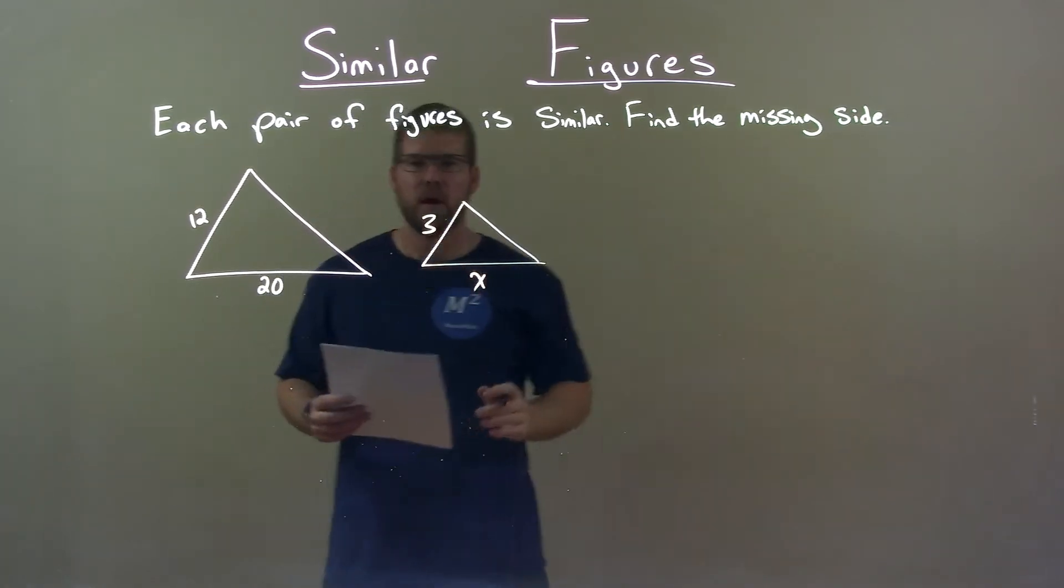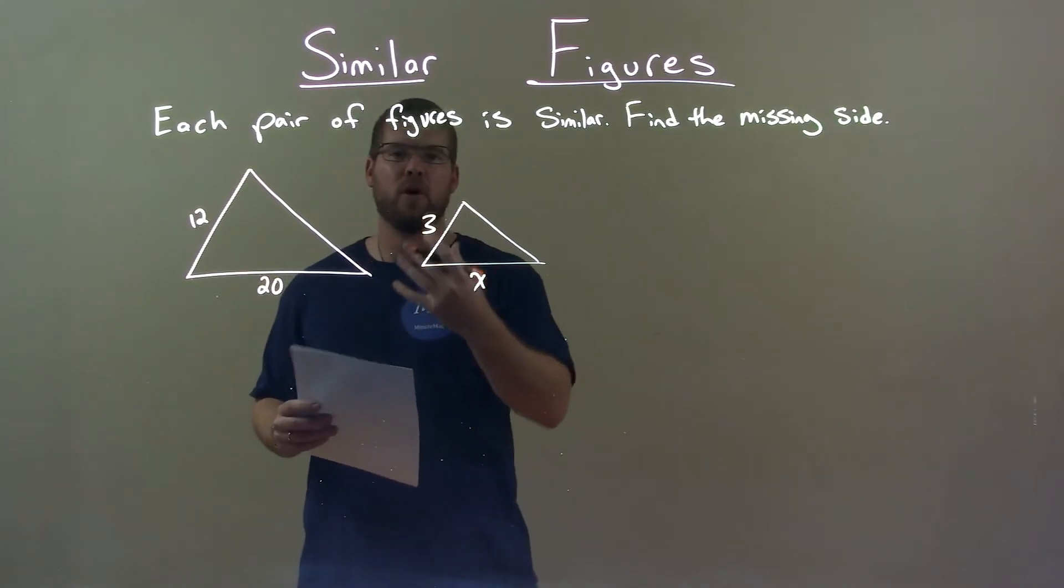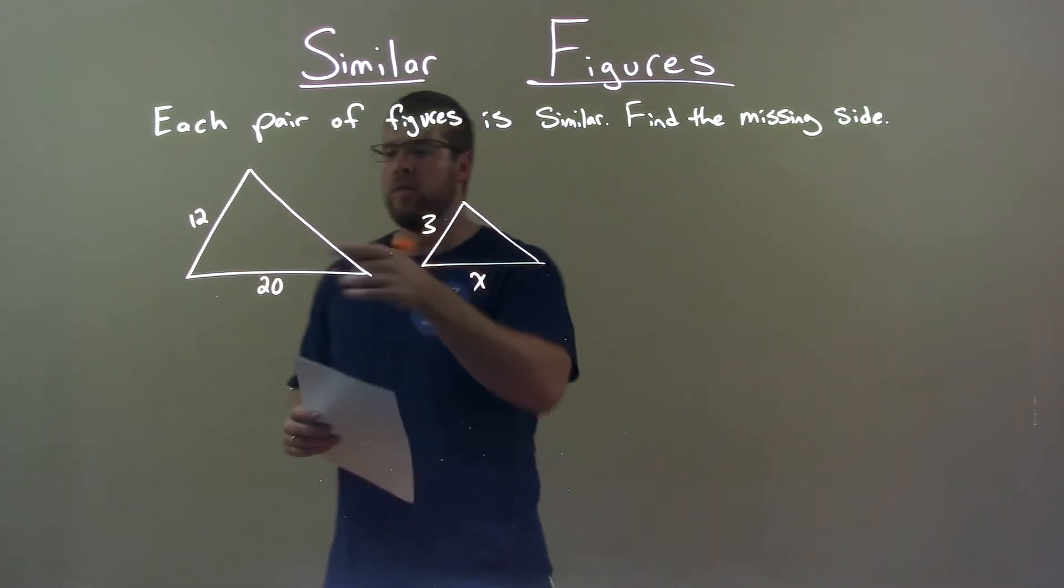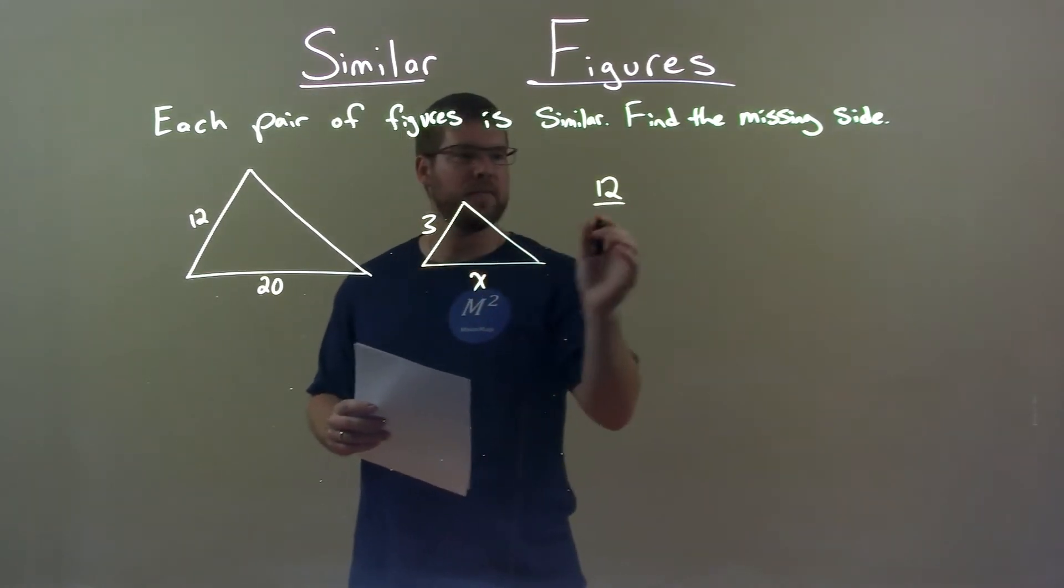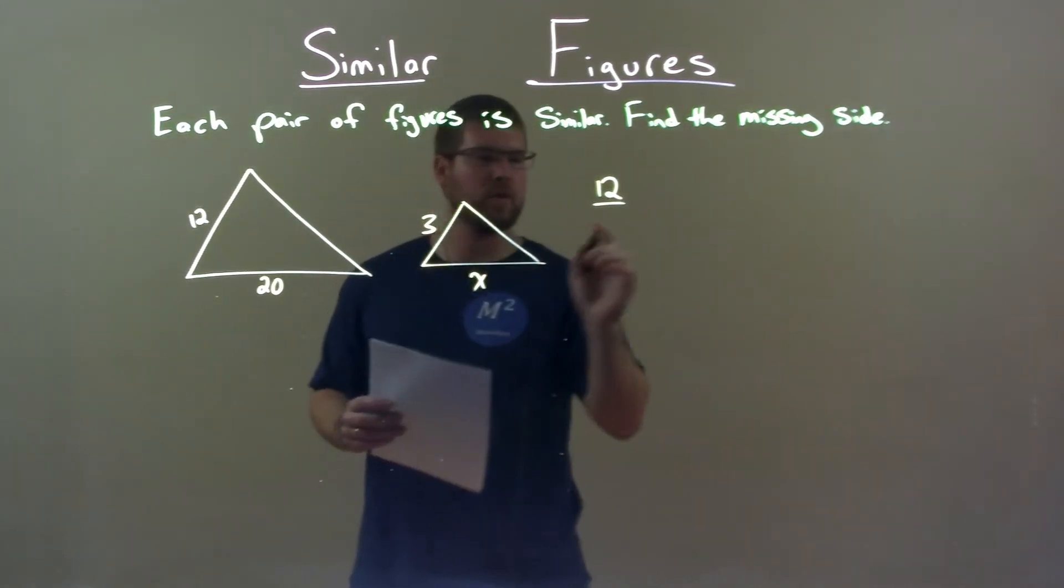Because these two triangles are similar, that means their sides are proportional. So we know that 12 over its corresponding side, 3...